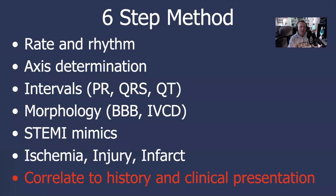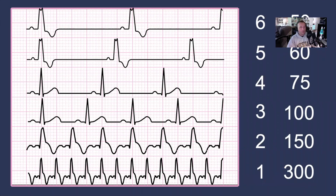In the last video, we introduced the six-step method for 12-lead ECG interpretation, and step one was rate and rhythm. In that video, I said that it's very important that we verify the computerized measurement of the heart rate with our own eyes. And one of the easiest ways to do that, at least with regular rhythms, is what we call the large block method.